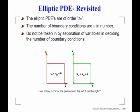Elliptic PDEs are always even-ordered because characteristics appear as complex conjugates. So the order must be 2n in space. If you have order 2n, you require n boundary conditions. This can be confusing because of how we often approach the problem via separation of variables.